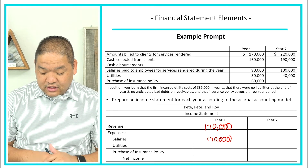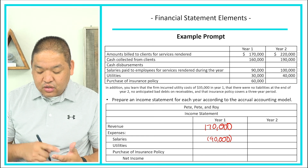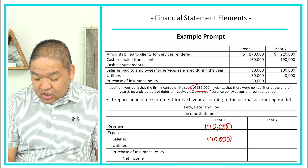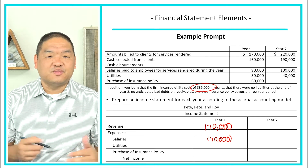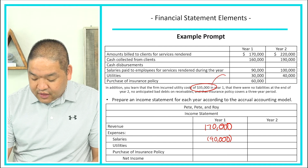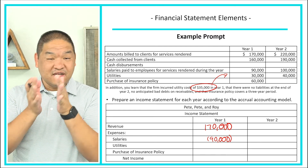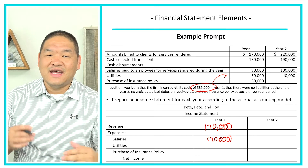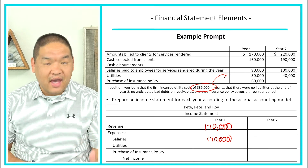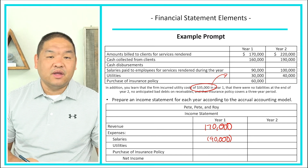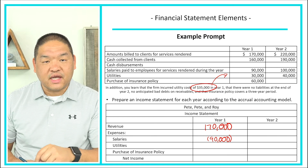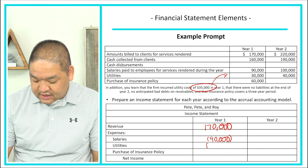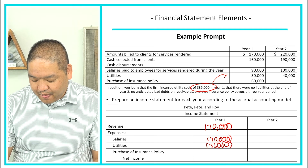For utilities, the additional information states the firm incurred utility costs of $35,000 in year one, but we only paid $30,000. Under the accrual method, we book the expense we actually incurred, not just what we paid. So even though we only paid $30,000, our utility expense for year one is $35,000, and we subtract $35,000.